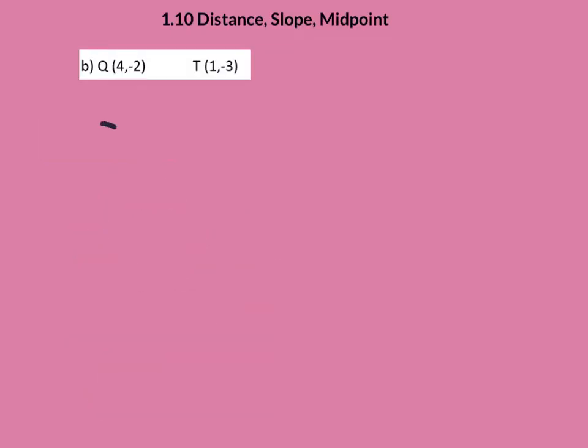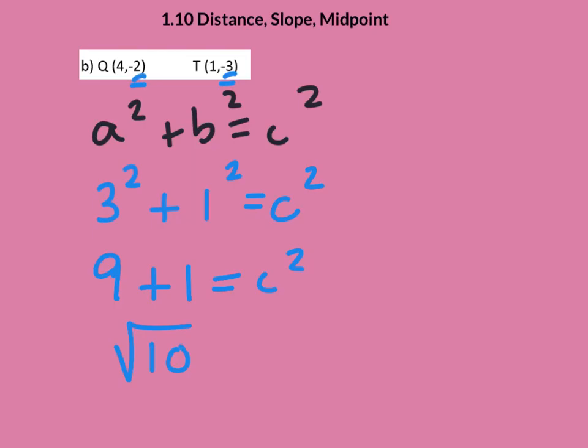So the Pythagorean theorem comes out. And I say to myself, how far is it from 4 to 1? And that answer is just simply 3. And then I say, how far is it from negative 2 to negative 3? That, of course, is just 1. And so, 1 squared equals C squared. This becomes 9 and 1 equals C squared. And then we get the square root of 10 as our answer. Stay away from that big, ugly distance formula. Use the Pythagorean theorem. You will love it.